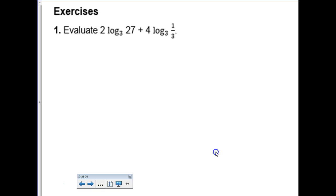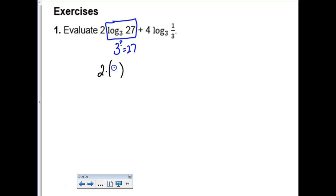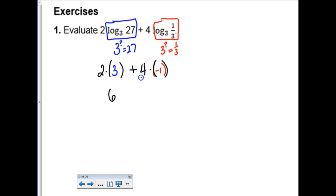Let's talk about this one - it says to evaluate, so I should be coming up with a numerical answer. Let's keep it expanded because our brain likes smaller numbers. Log base 3 of 27 means 3 to what power gives you 27? That's 3. So you have 2 times 3. Then 4 times log base 3 of 1/3 - 3 to what power gives me 1/3? A negative 1. So 4 times negative 1 is negative 4. So 6 plus negative 4 is 2.